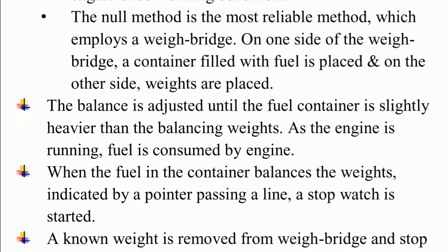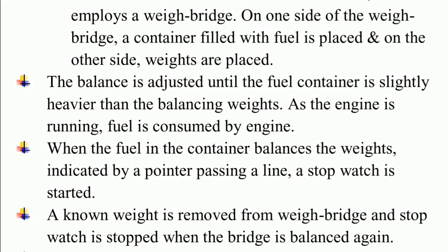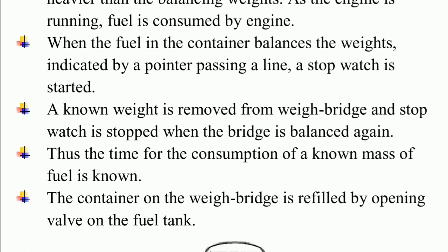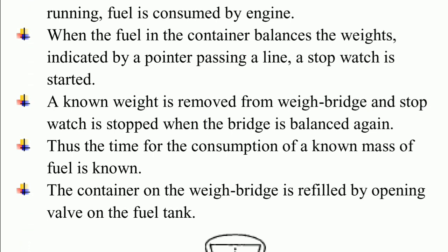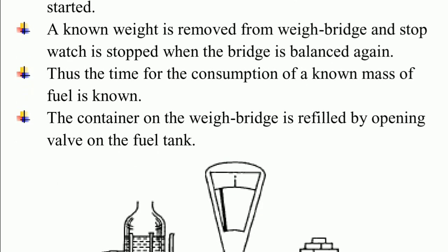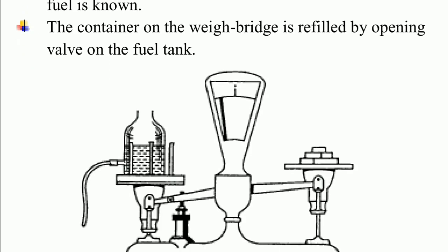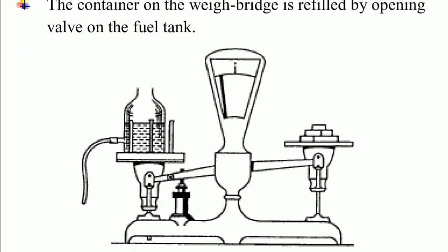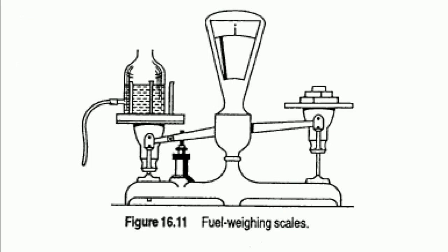The balance is adjusted until the fuel container is slightly heavier than the balancing weights. As the engine runs and fuel is consumed, when the fuel in the container balances the weights — indicated by a pointer passing a line — a stopwatch is started. A known weight is then removed from the weight bridge and the stopwatch is stopped when the bridge is balanced again. Thus the time for the consumption of a known mass of fuel is recorded. The container is refilled by opening a valve on the fuel tank. A figure of the fuel weighing device is shown.